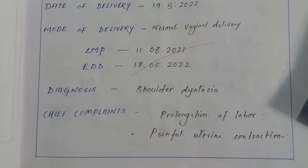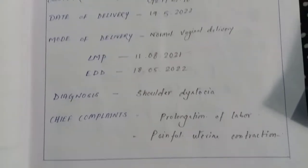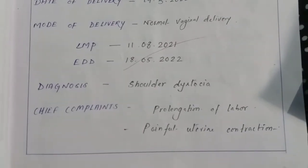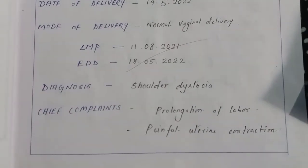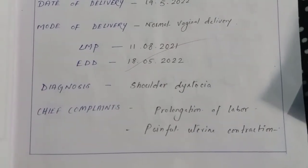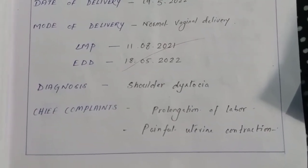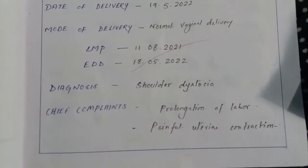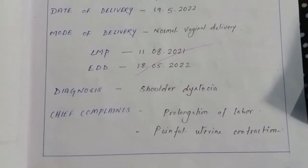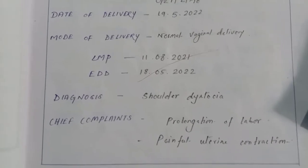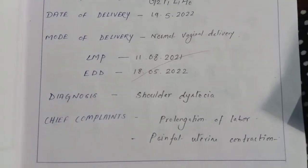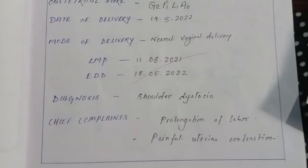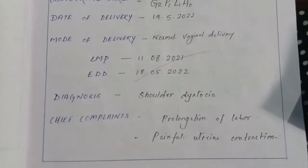The chief complaint is prolongation of labor. Normal labor duration in a primigravida mother is ten to twelve hours, and in a multigravida it is six to eight hours. It is termed prolonged labor when it exceeds sixteen to eighteen hours.